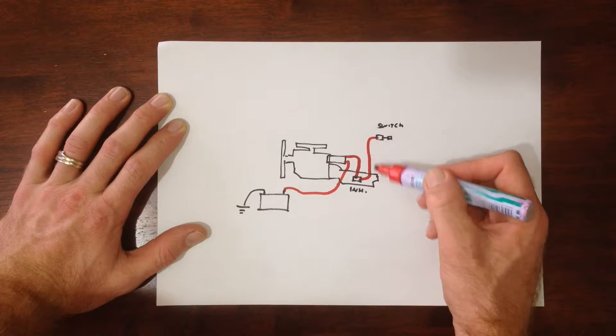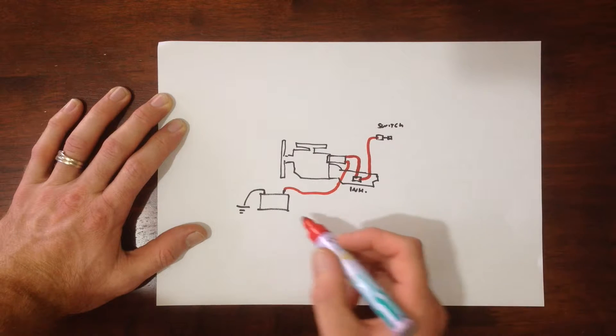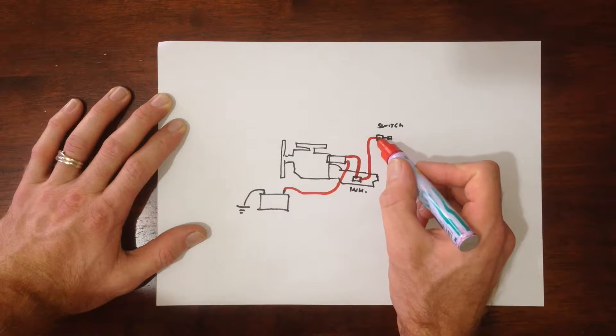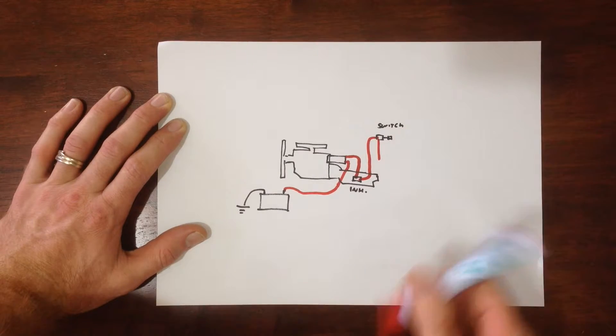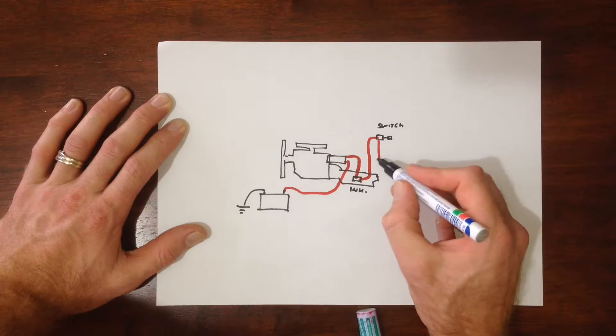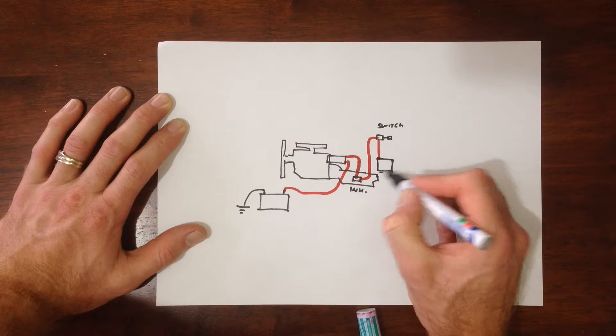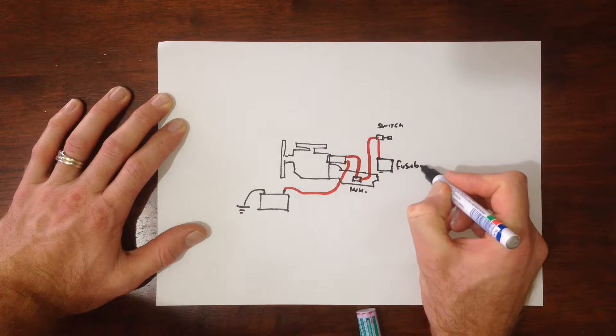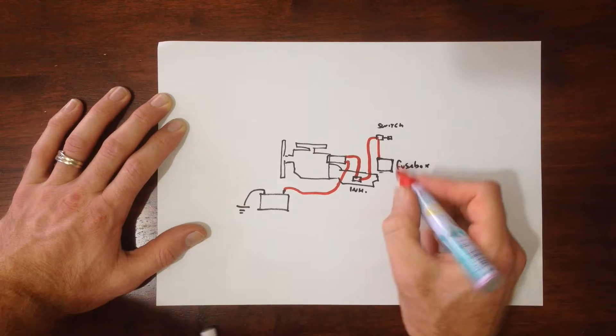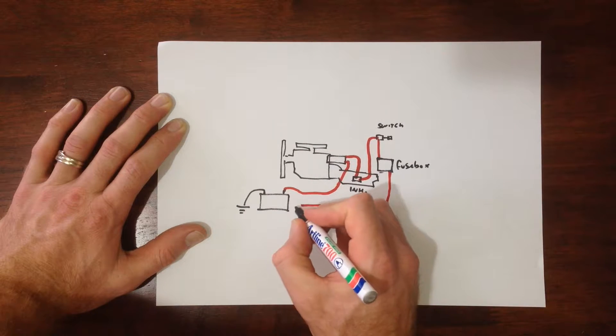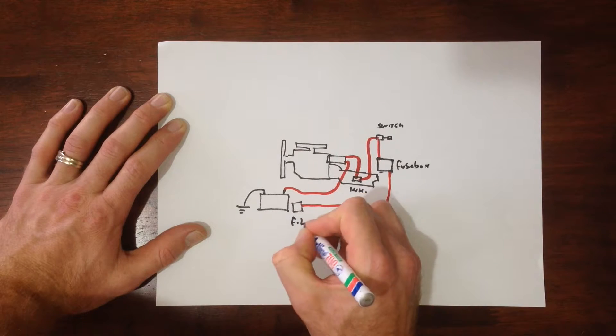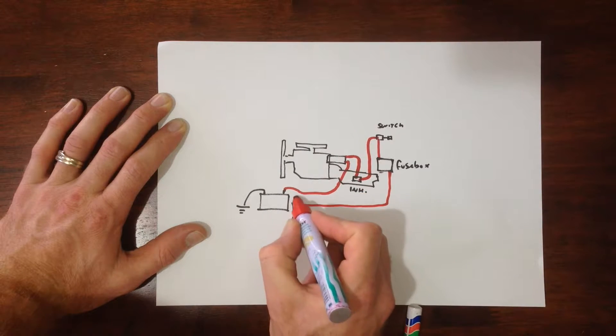Now, because the ignition switch is a long way away from the solenoid, and also, it's only powered through the fuses of the car. So it goes down through the fuse box, like this. All the way down. Through the fusible links, and then to the battery.